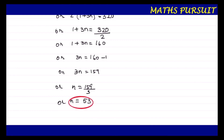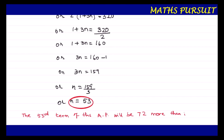So that is our answer. The question asks which term of the arithmetic progression — we can say that the 53rd term of this arithmetic progression will be 72 more than its 41st term.